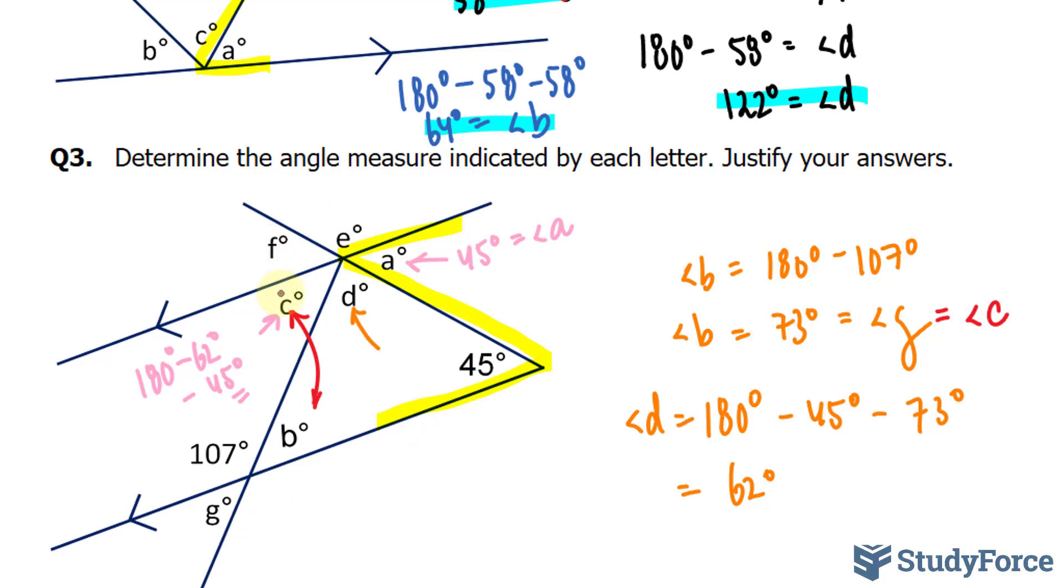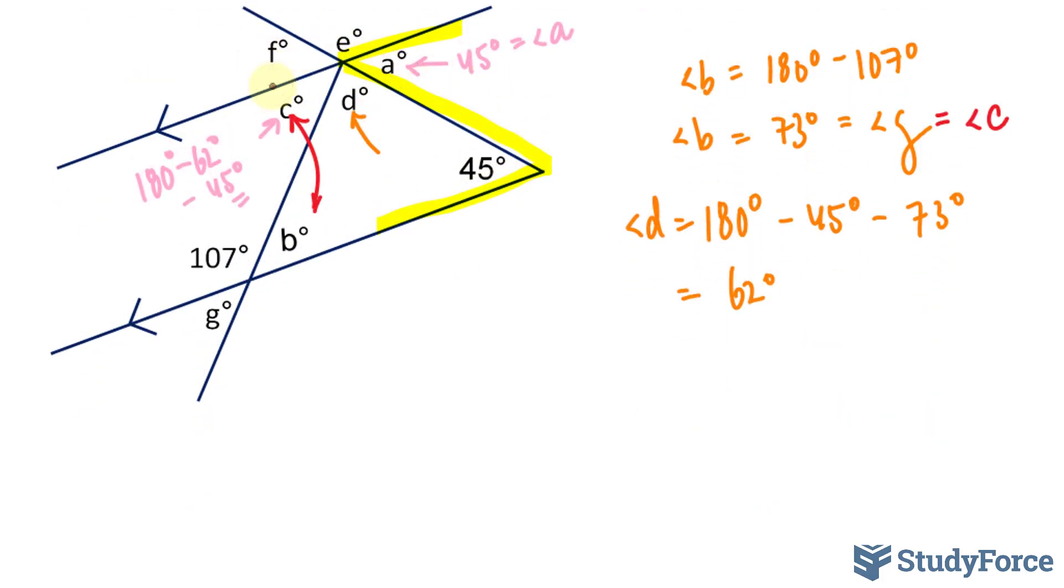Now we have to find out E and F. That's not hard to do. A and F are going to be the same. Angle A is equal to angle F because they're opposite angles.